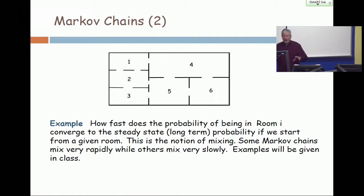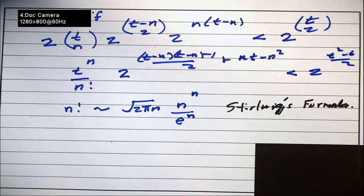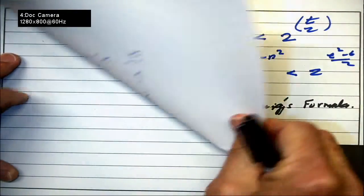That depends on the configuration, but it does not depend on where you start. So the kinds of things that probabilists want to know is how fast does it converge to the steady state uniform? Now, let me give you an example to illustrate fast and slow. Entirely intuitive.